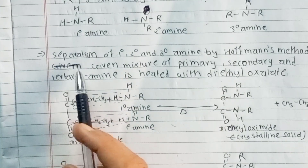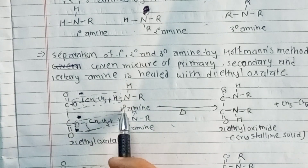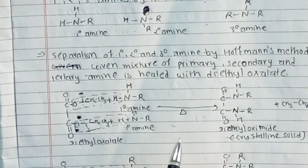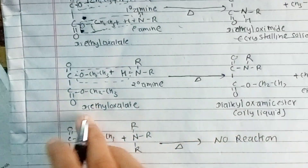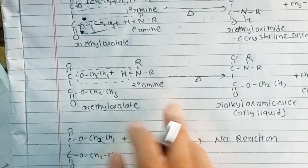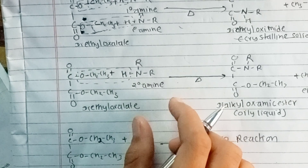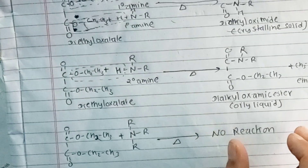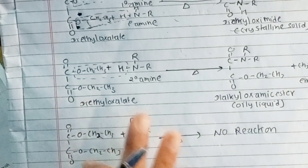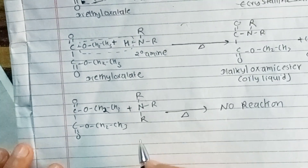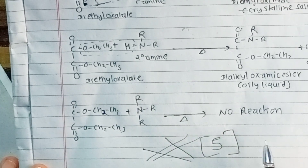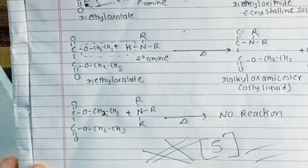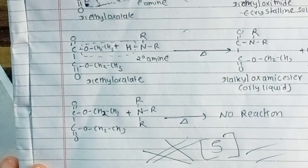To summarize: primary amine reacts with diethyl oxalate to give a crystalline solid, dialkyl oxamide. Secondary amine reacts with diethyl oxalate to give dialkyl oxamic ester. Tertiary amine does not react with diethyl oxalate.